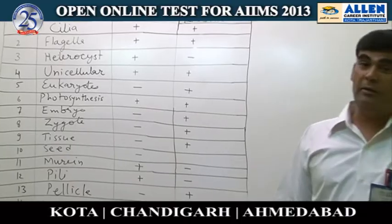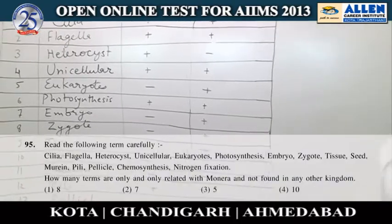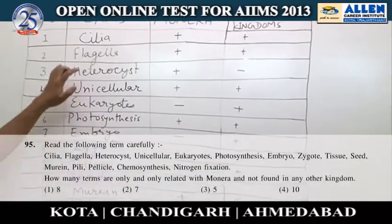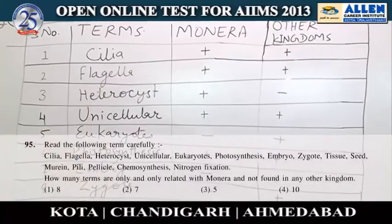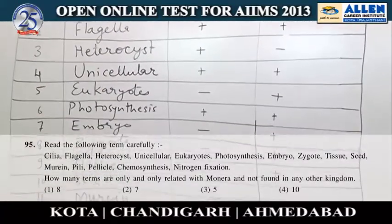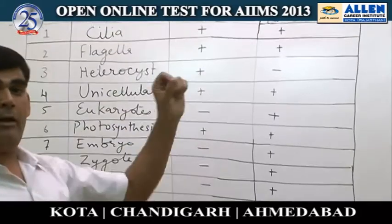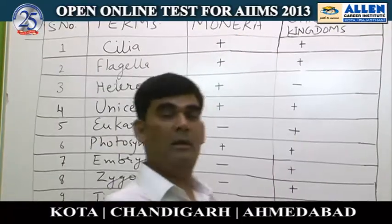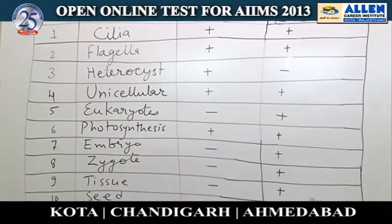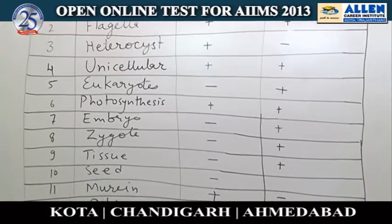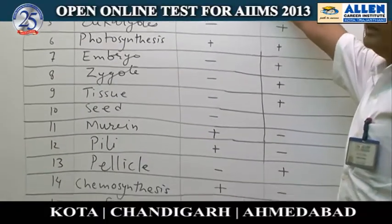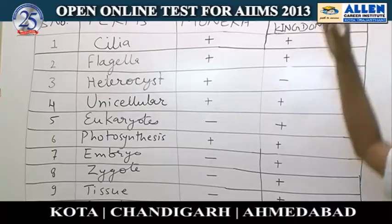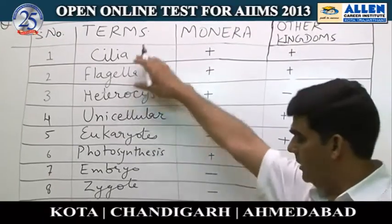We are here discussing question number 95. As you have seen in the paper, there are 15 characters. The question is asking about which is only and only the characteristic feature present in Monera — the character that is in Monera but not in the rest of the other four kingdoms.